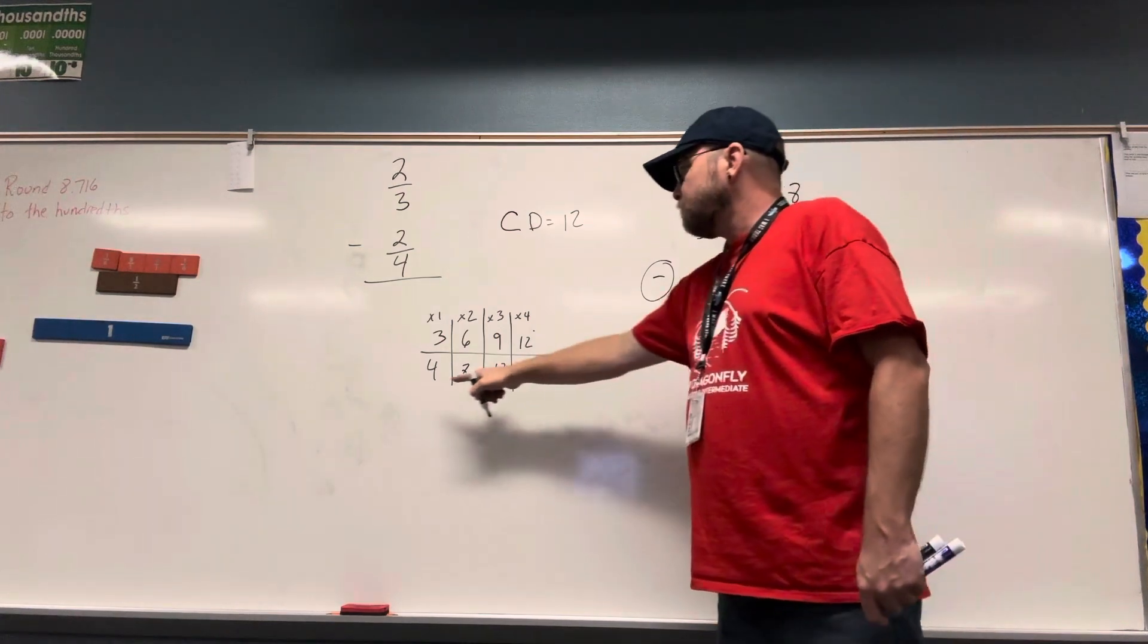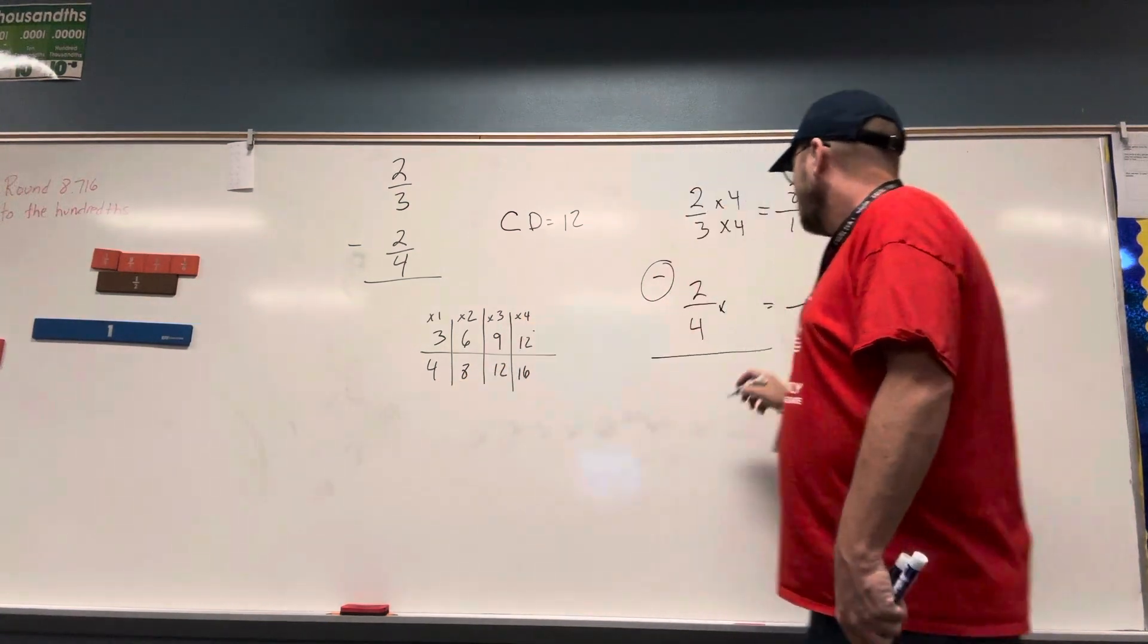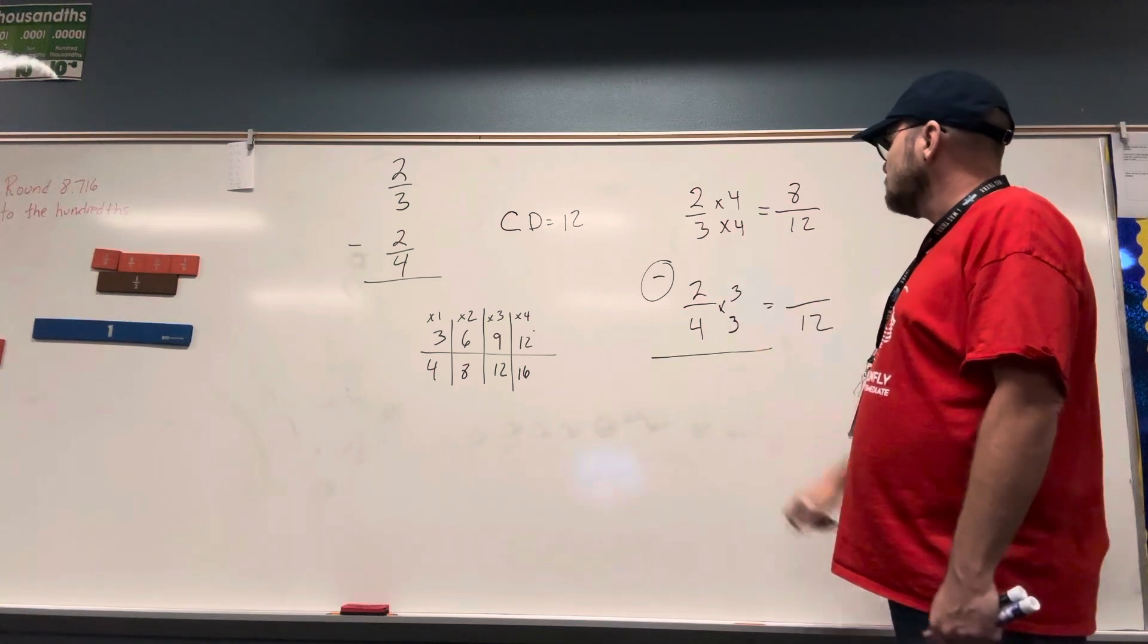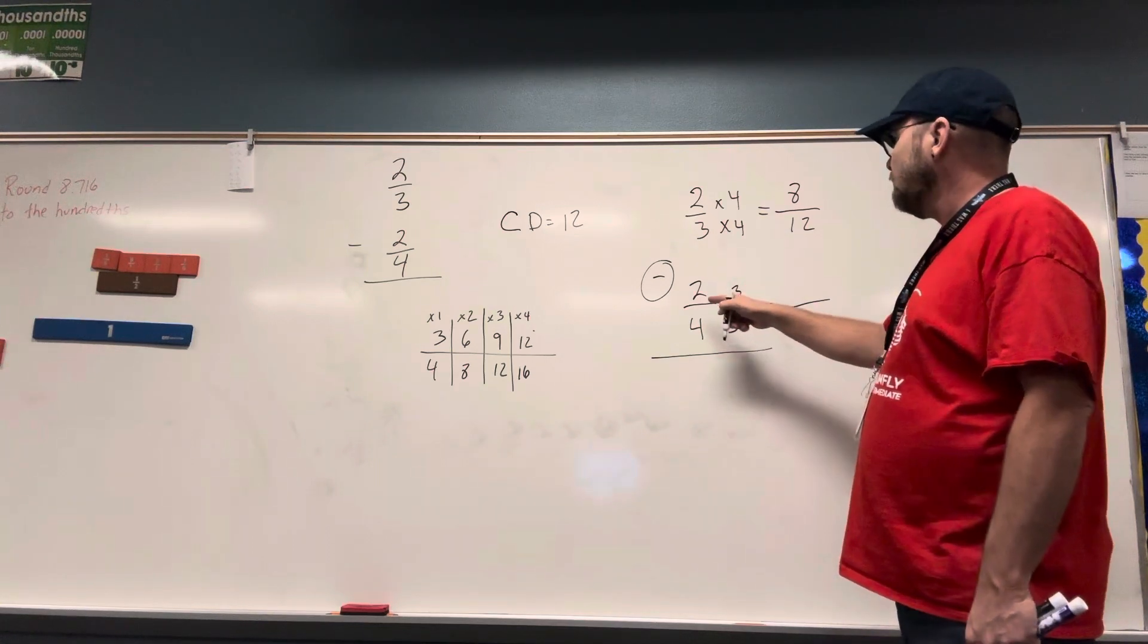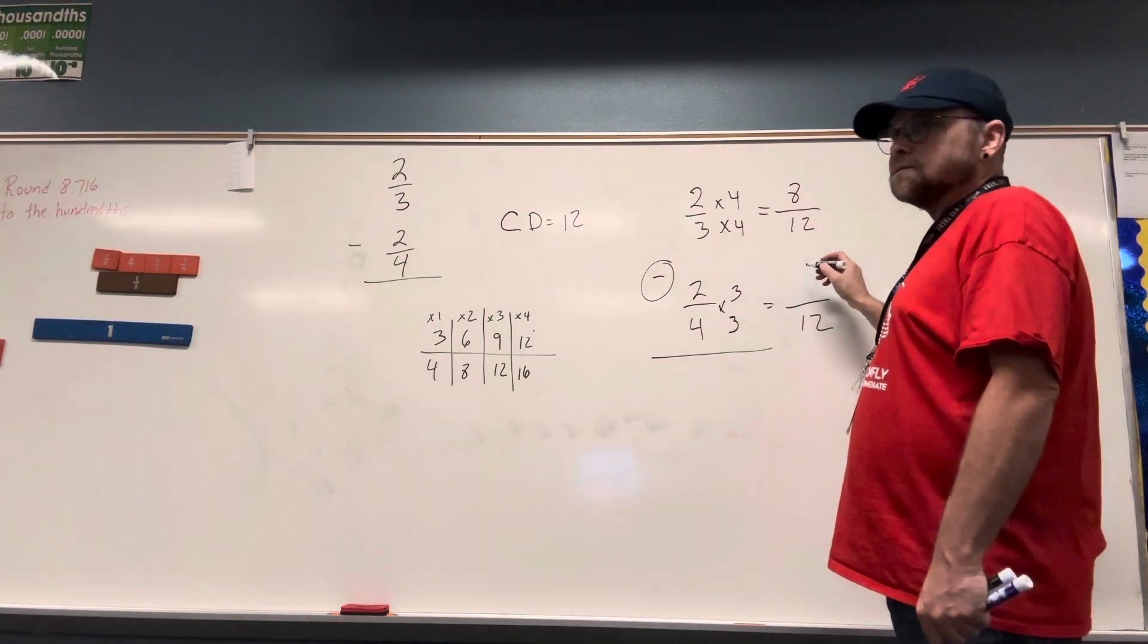What did I multiply by 4 to get 12? 3. If I multiply my denominator by 3, I must also multiply my numerator by 3. And 2 times 3 is? 6.